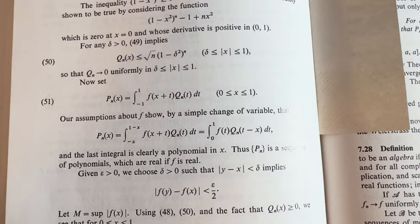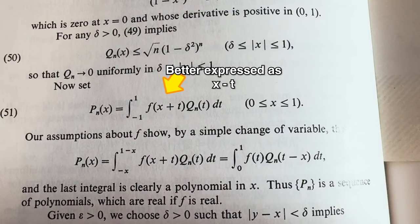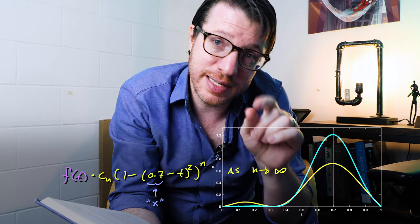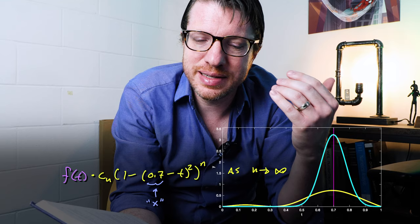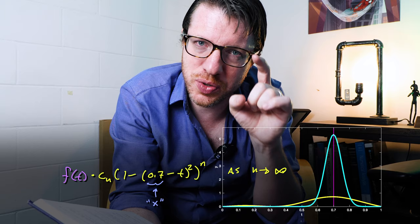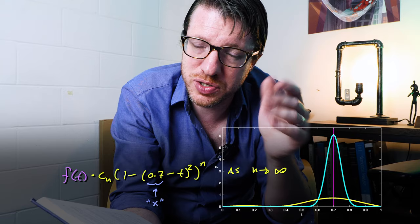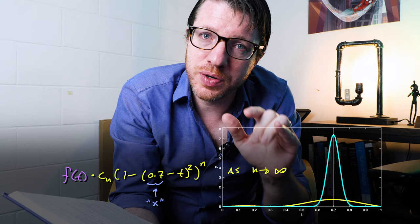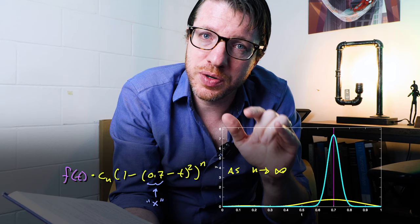Rudin kind of obscures a few things and doesn't explicitly write out his polynomial approximation in terms of a convolution, which is really what it is. What we're going to do is look at pn(x) and see what changes when we view it as a convolution. Ultimately, we'll be emphasizing a single part of f depending on where we put x, so as n goes to infinity, we have area 1 concentrated in a very infinitesimal spot, which then concentrates all of the function value right there at f(x).